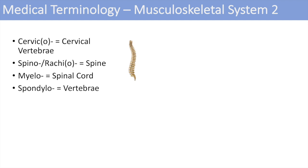The next one is spondylo, which denotes the vertebrae. You can think of ankylosing spondylitis, a condition involving pain in the vertebrae. The next one is sterno or sternum, which is pretty easy to remember.